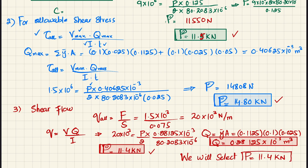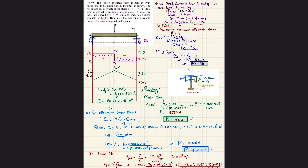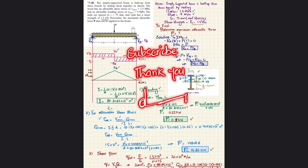Conclusion: we have three values — P = 11.4 kN (bending), P = 14.80 kN (shear stress), and P = 11.55 kN (shear flow). We select P = 11.4 kN, the smallest value, which satisfies all three conditions. That was problem 7-40. If you have questions, ask in the comments — thank you for watching.